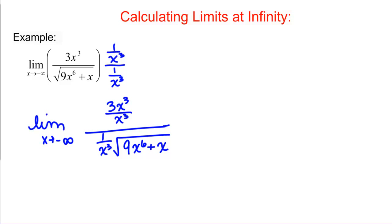On the top it's still just as easy to simplify. We can cancel out the X cubes, but on the bottom we now need to rewrite 1 over X cubed as something square rooted, and it seems like we would want to use 1 over X to the 6 again like we did before.